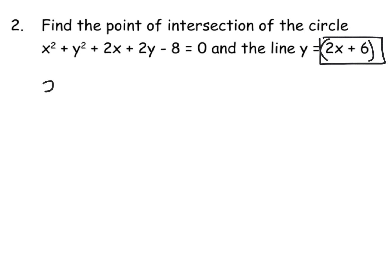So we have x² plus (2x + 6)² plus your 2x. And just be careful, it's really easy to miss a term out here. And then you've got another y again. So that becomes 2(2x + 6) - 8 = 0. Right, we've got some bracket work to do here.